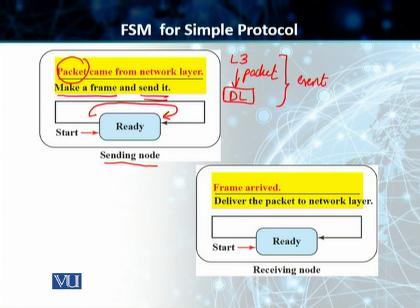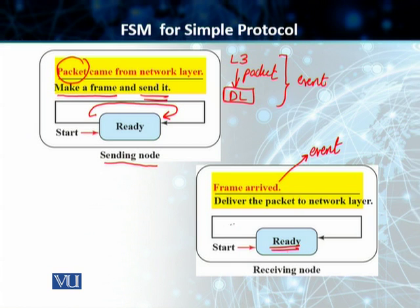At the receiving node, the event is that a frame arrives from the sender. Starting from the ready state, when the frame arrives, the receiver extracts the packet and delivers it to the network layer, then loops back to the same ready state again.